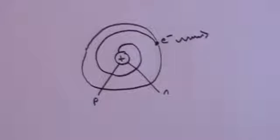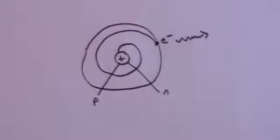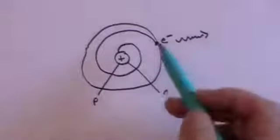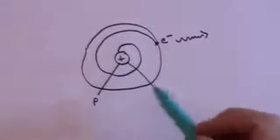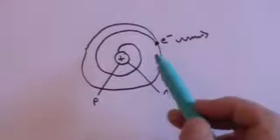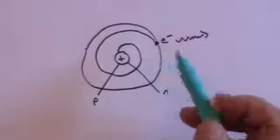And that would all happen in 10 to the minus 14 of a second — 100 million millionth of a second — and therefore there would be no atoms. Well, there clearly are. So there's obviously something seriously wrong with this model on two counts. How can we explain it?